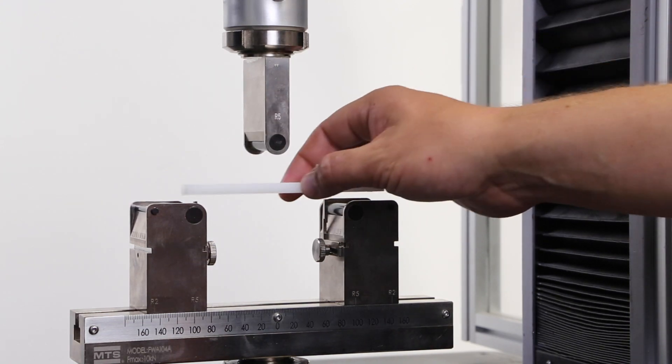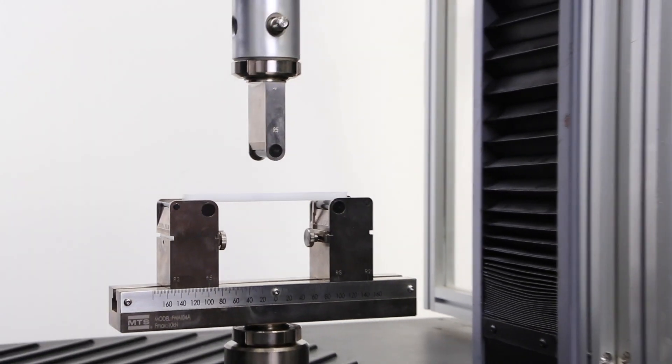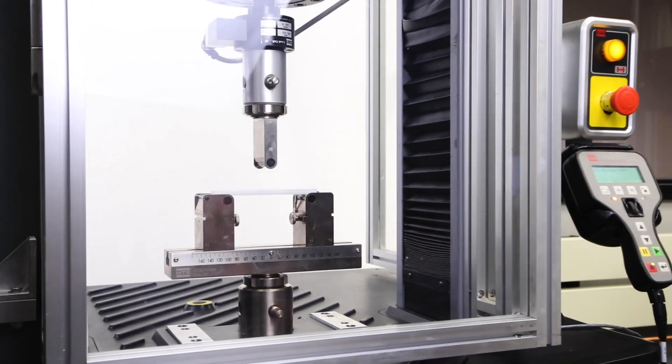The specimen is placed in the testing area and centered under the upper fixture. To assist with this, our bend fixture has integrated alignment pins.